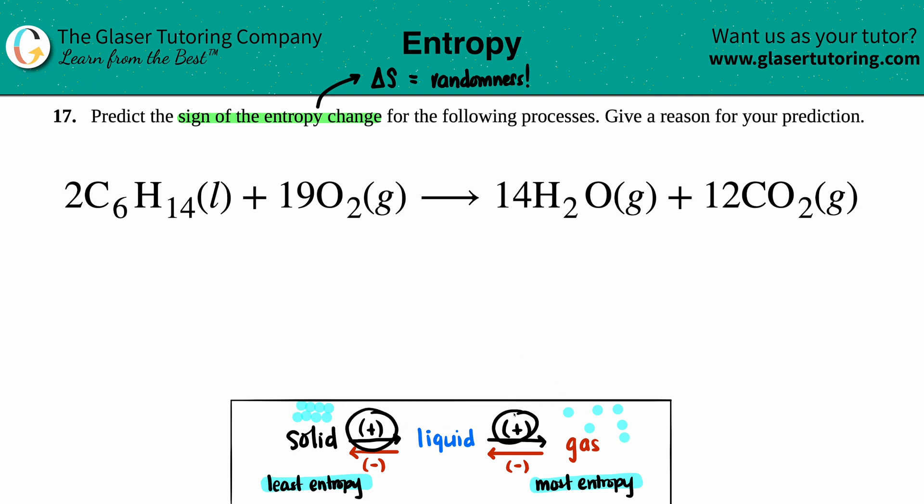delta S would be positive—you're gaining entropy, gaining randomness. But as you're going backwards, if you're going from something that's chaotic to something that is very structured, that's a negative entropy, negative delta S, right? Because you're losing entropy values.